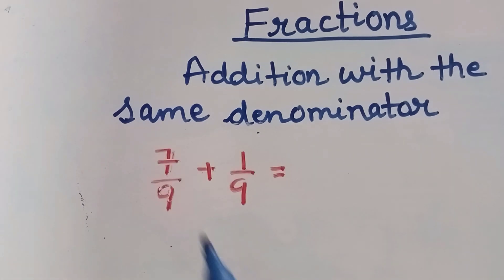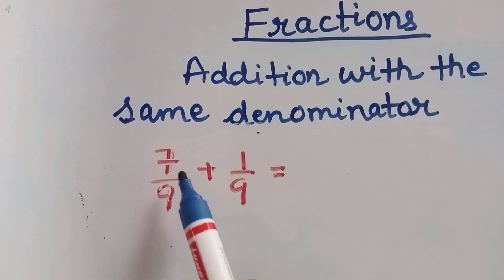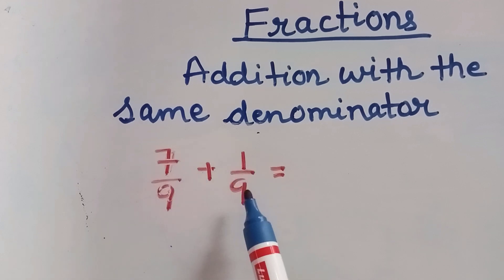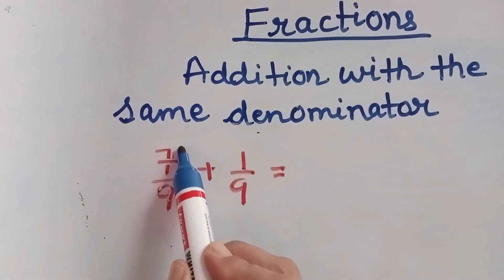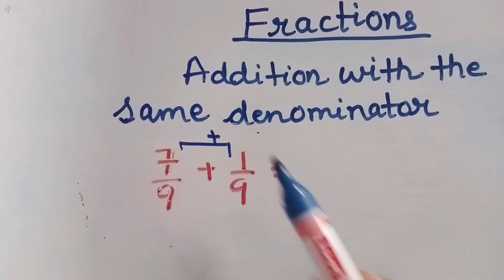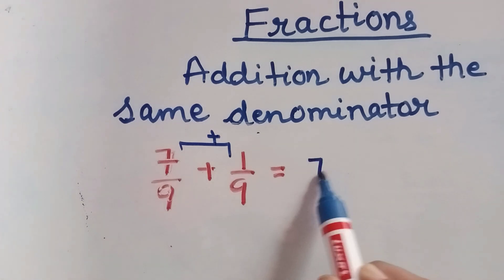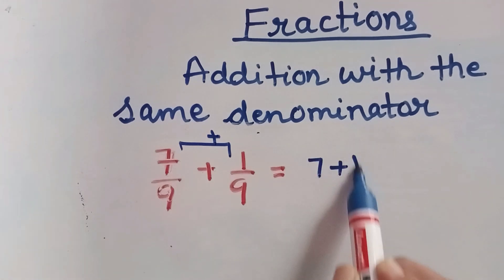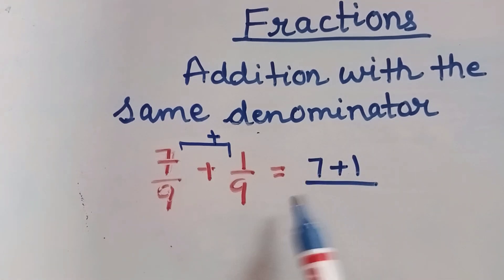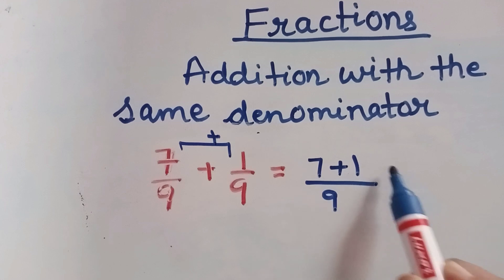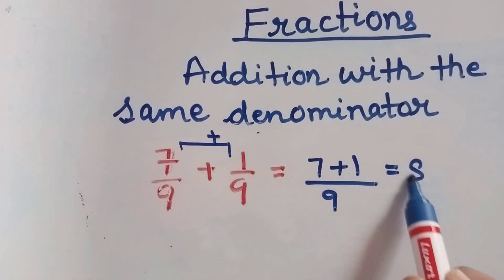Let us take another example. We have to add 7 by 9 plus 1 by 9. Here again the denominator is same, that is 9. So we will add these two numerators — 7 plus 1 — and in the denominator we will write 9. So here it is 7 plus 1 is 8 by 9.